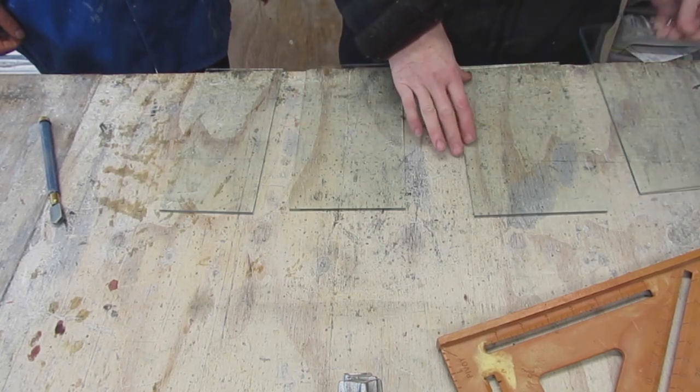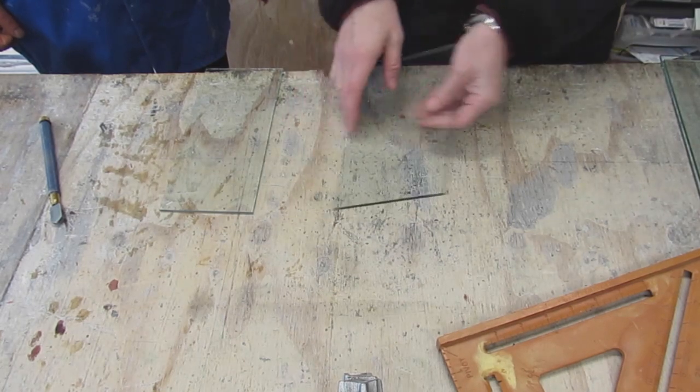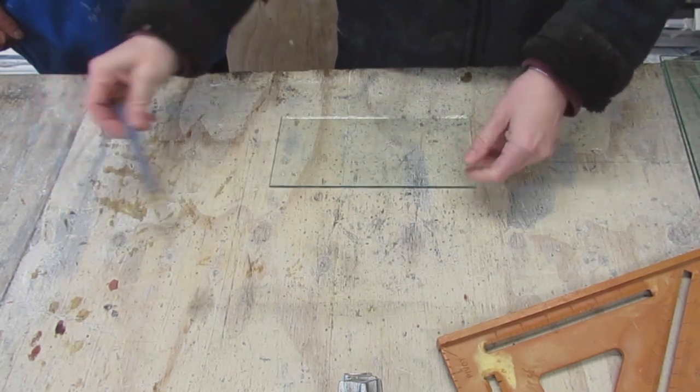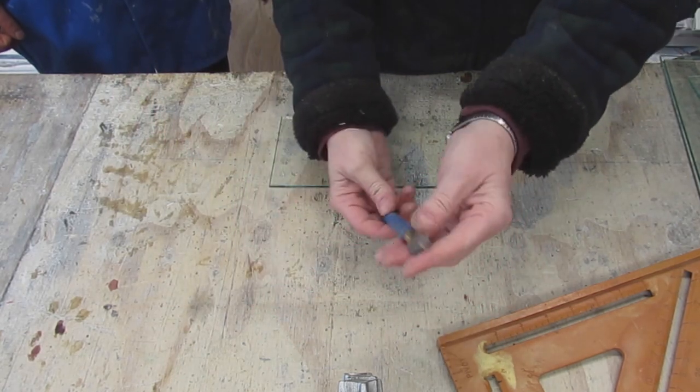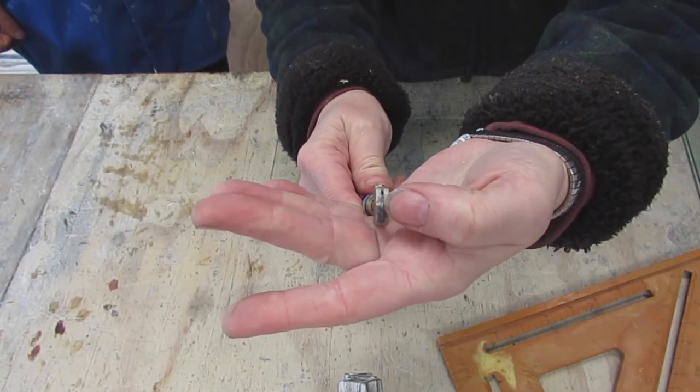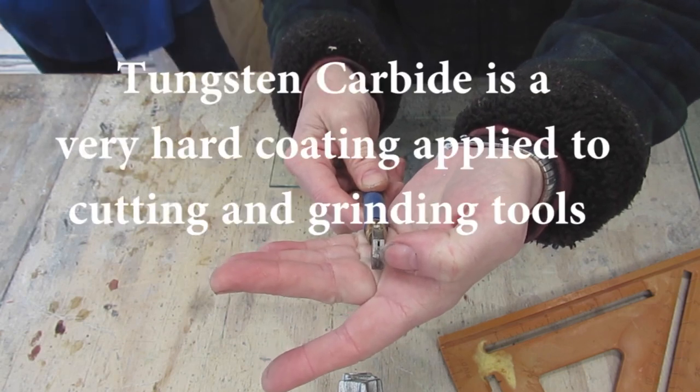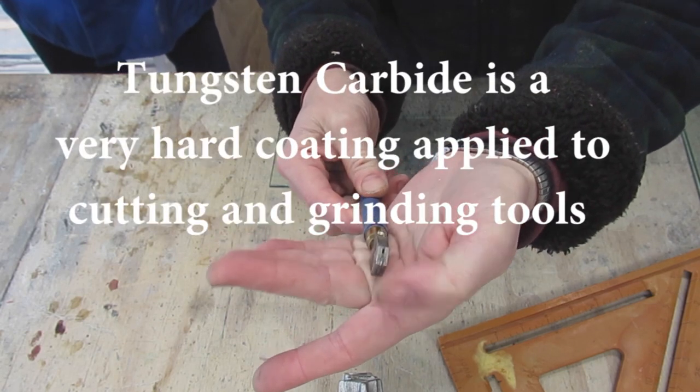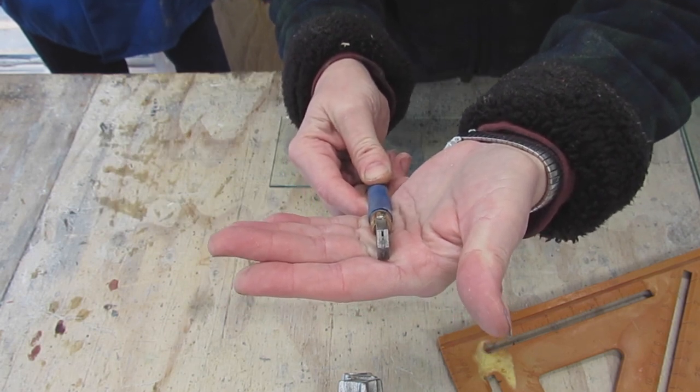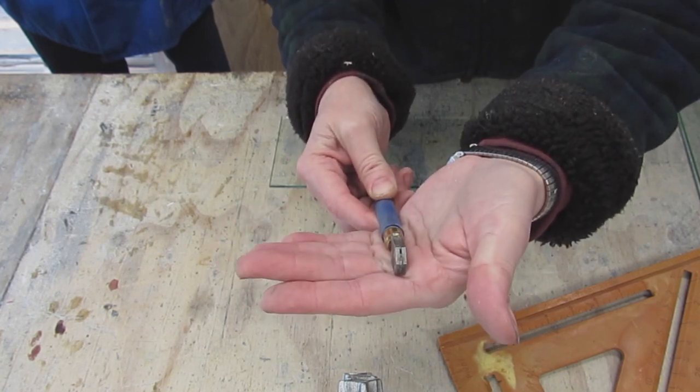So we've got some scrap glass for Will to learn to cut on and the first thing I'm going to do is explain the anatomy of a cutter. So this is your cutter and the cutty bit is this grinding wheel here and it's tungsten carbon, and what it does is scores the surface of the glass which creates an area of weakness which you then exploit by snapping it.